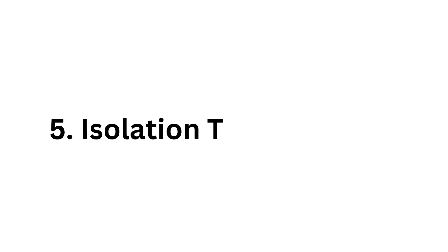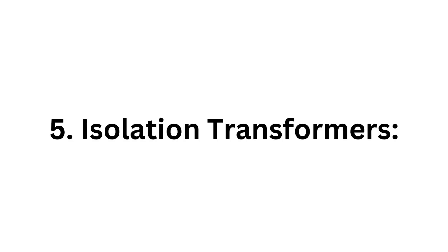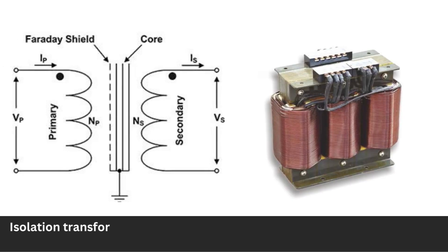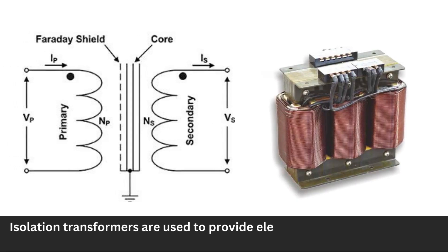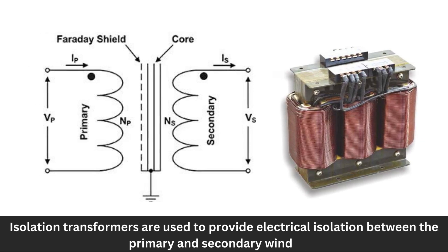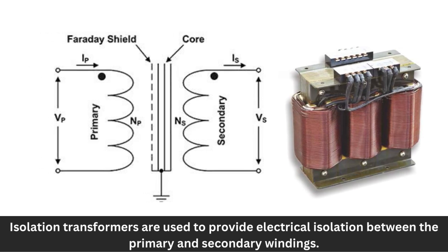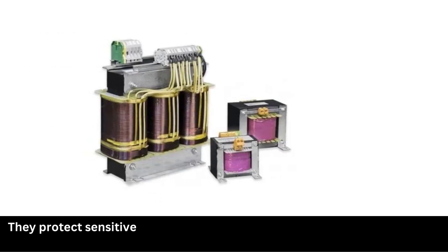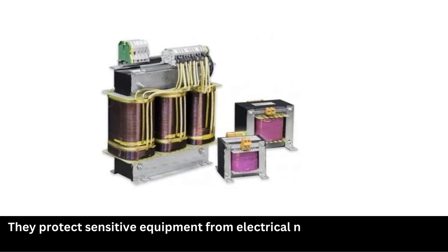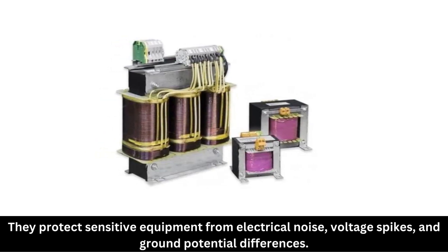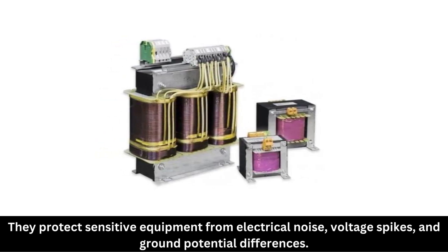5. Isolation transformers. Isolation transformers are used to provide electrical isolation between the primary and secondary windings. They protect sensitive equipment from electrical noise, voltage spikes, and ground potential differences.